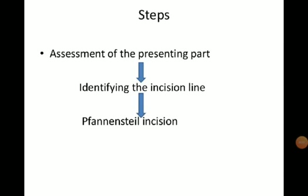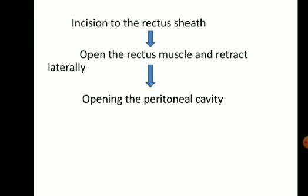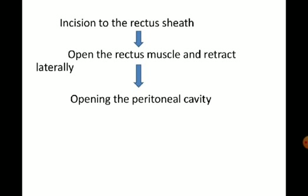Now come the main steps of caesarean section. We have made a transverse incision on the lower segment, 3 cm above the symphysis pubis. We have to cut layer-wise: skin, fat, rectus sheath, muscles, and peritoneum — specifically the parietal peritoneum and visceral peritoneum.